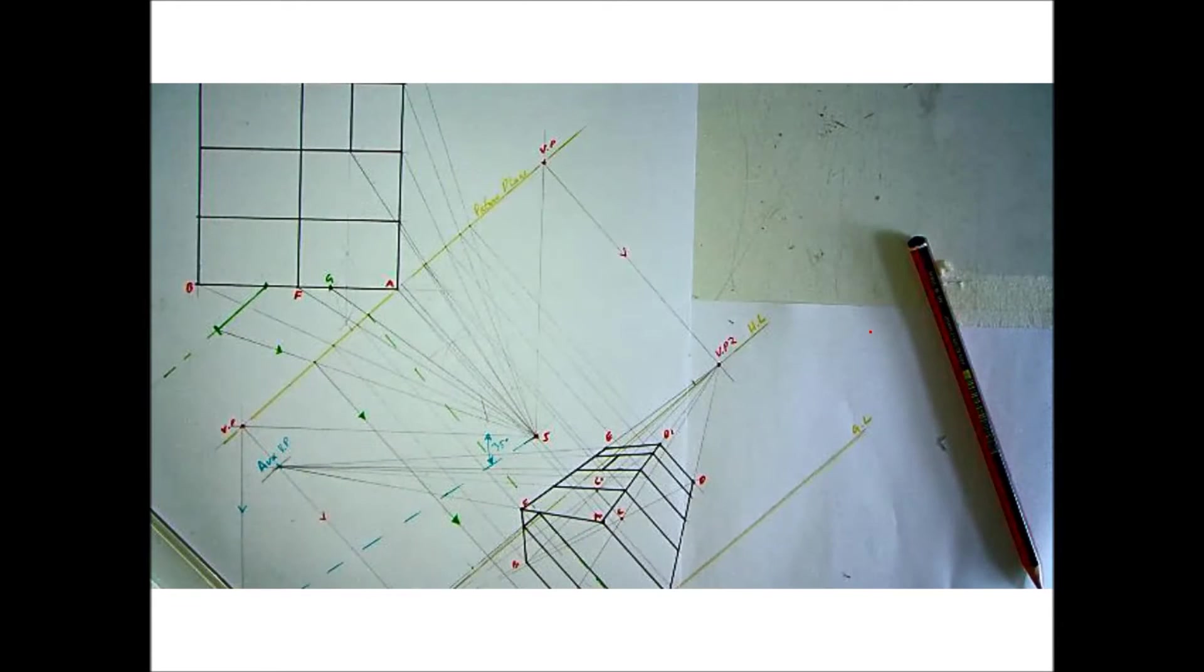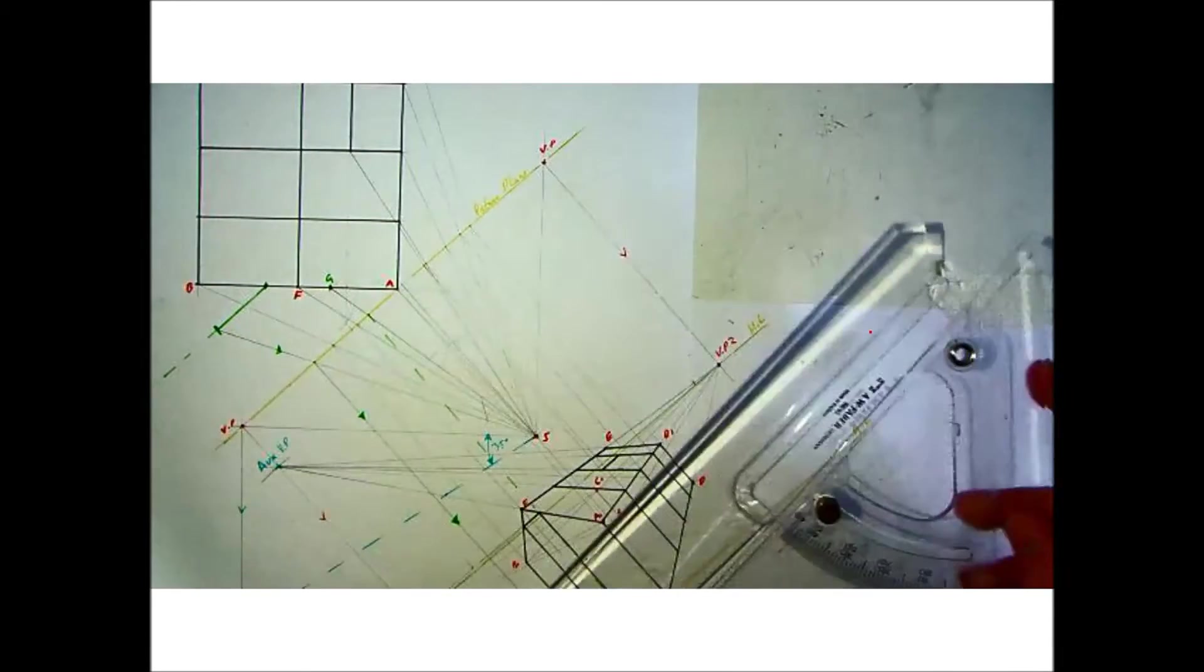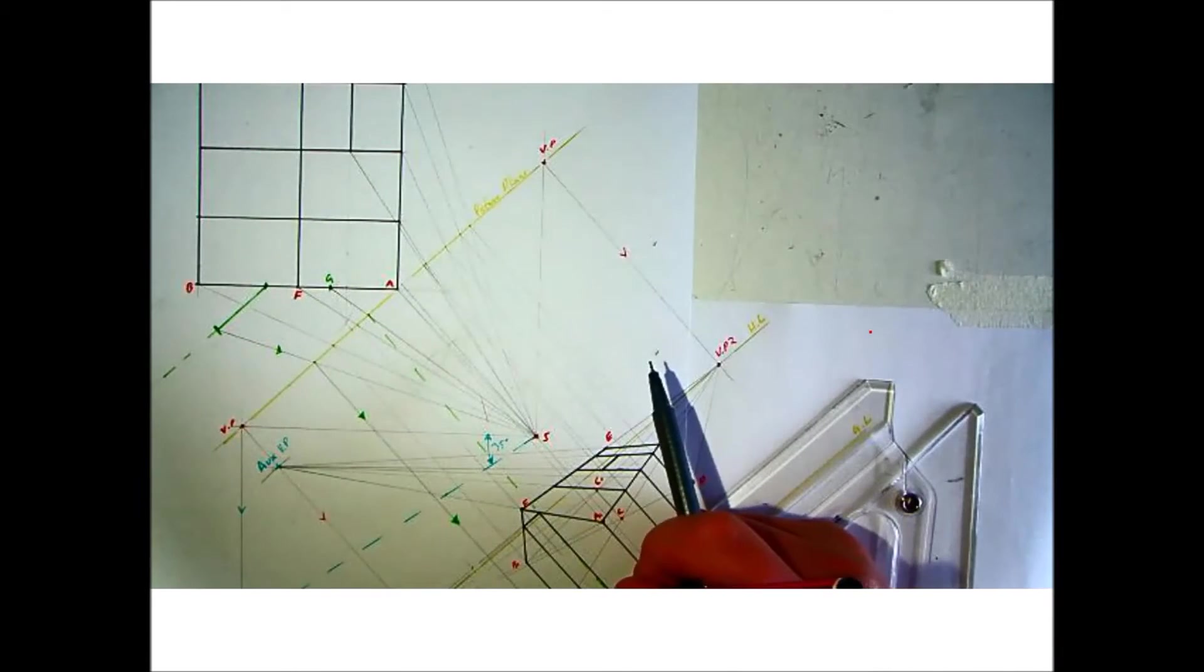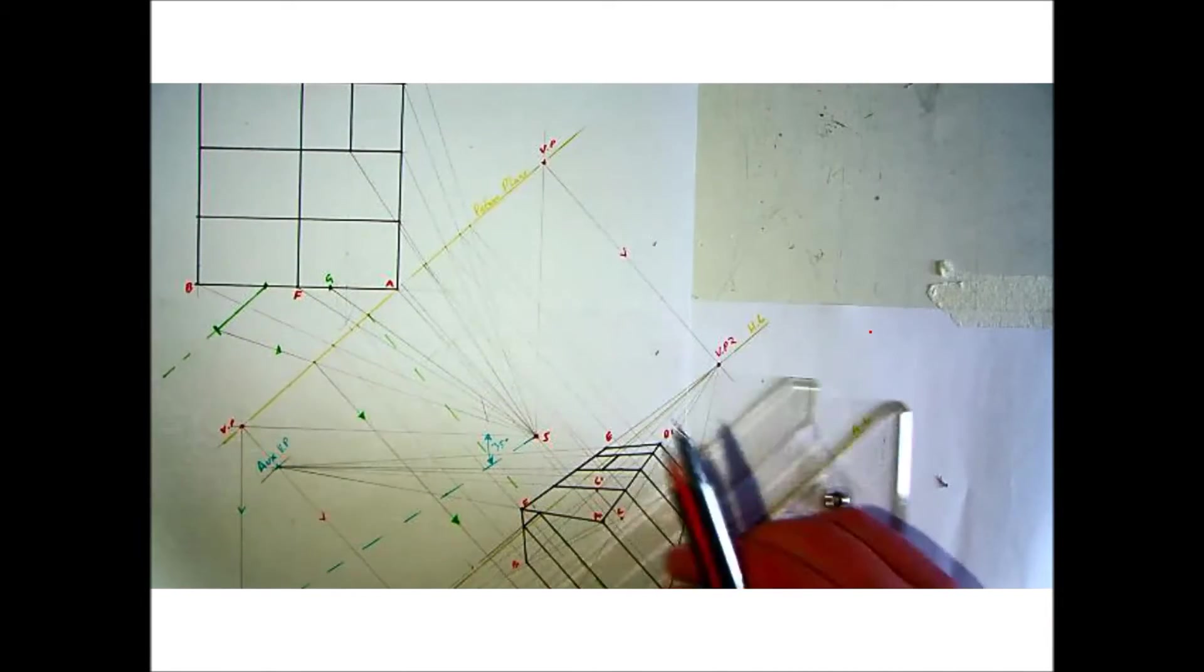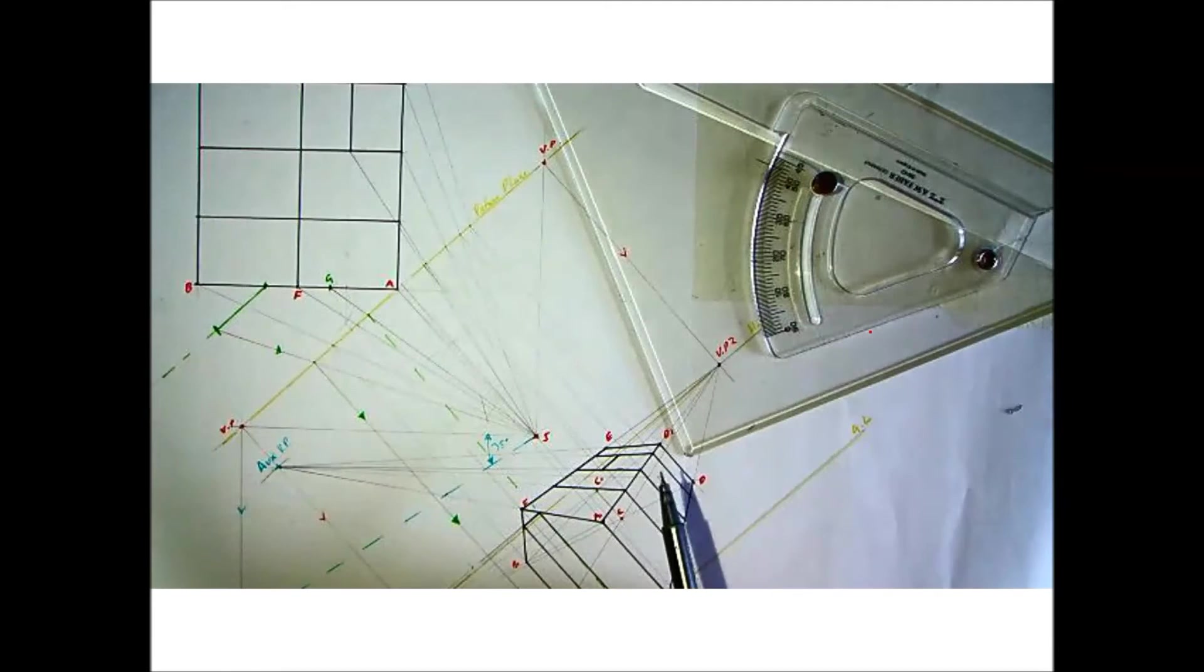Now because it's parallel to the picture plane, our hinge or our top and bottom of the door will also be parallel to the picture plane. So that means we can bring out the base and the top parallel to the picture plane and that's giving it our width back.